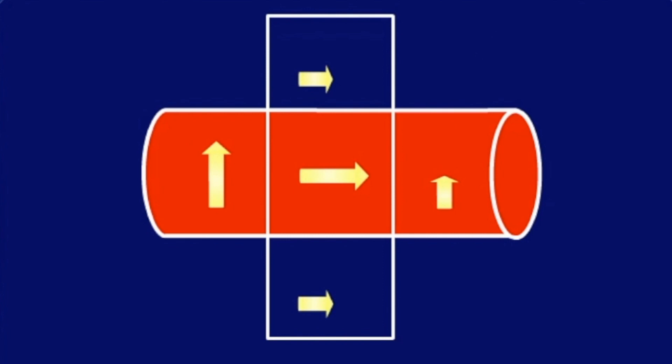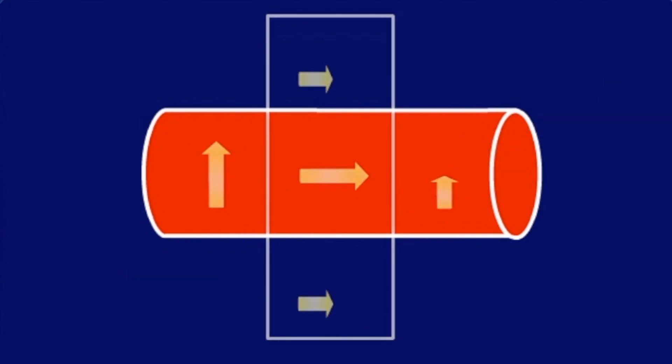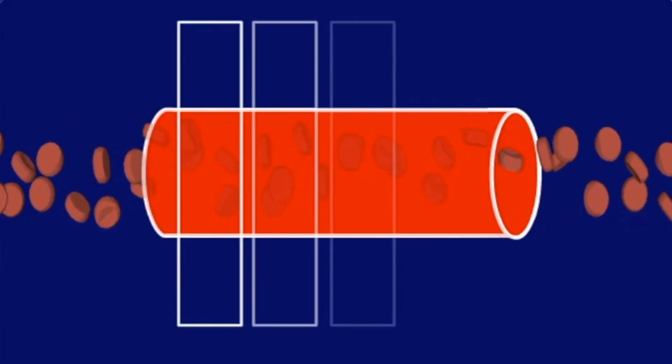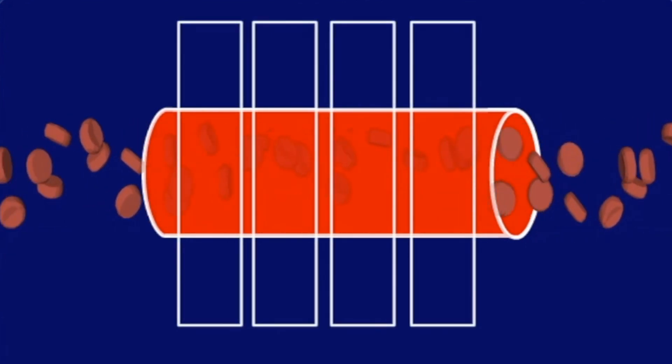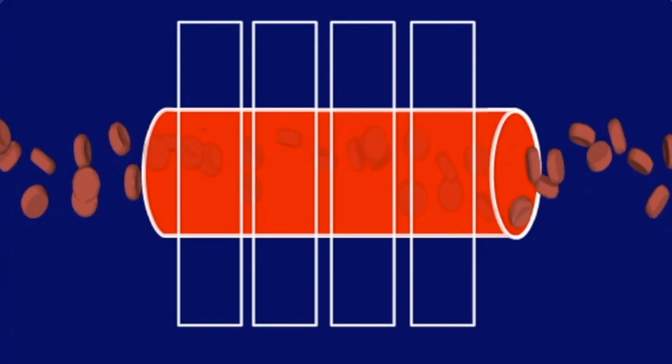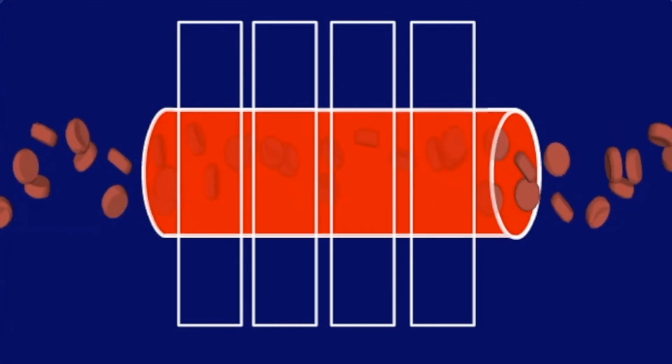The whole subject with signal strength and flow effects is actually much more complicated. For example, when you do multi-slice imaging, in other words, taking images of more than one slice at the same time, we'll hear about this technique later, the signal also depends on the direction of the flow.